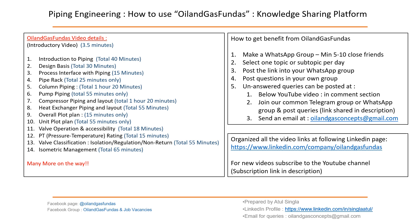The agenda of this video is how to get benefit from Oil and Gas Funders. I would recommend that you make small groups of maybe five to ten close friends, and share one topic or subtopic per day on that group. Post the link on your WhatsApp group, and you will find that within one or two weeks the group will be very active.